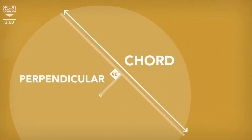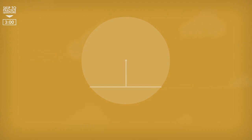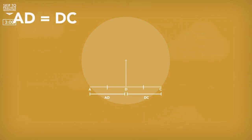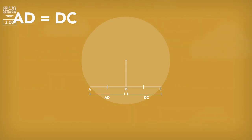Perpendicular basically means a line meets another line at a 90 degree angle. Another feature of this perpendicular line is that it also bisects the chord, creating two equal length lines, making length AD the same distance as DC.